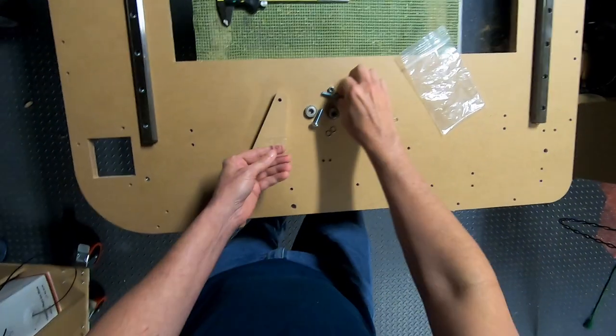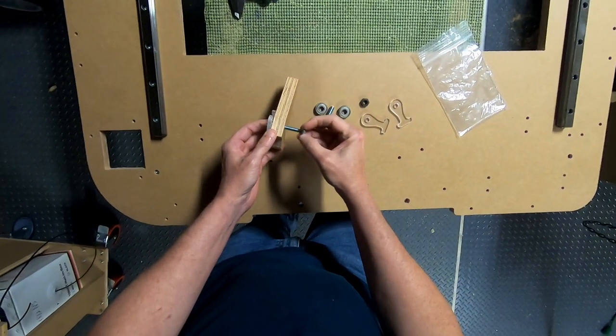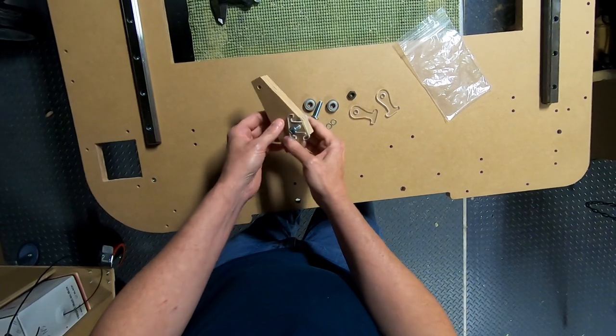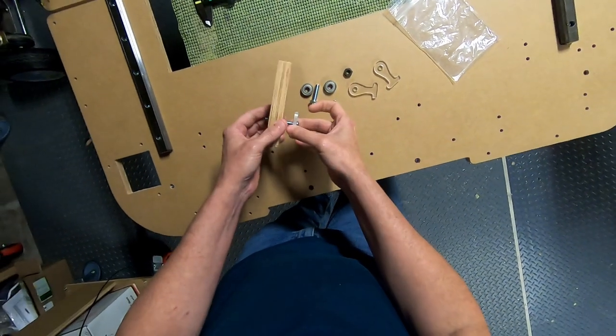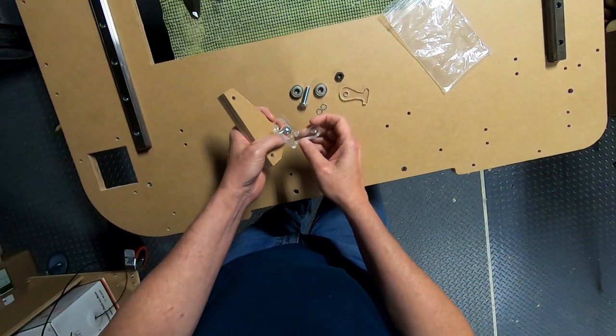We'll start by putting this piece into here, and you don't want to put the nut all the way down. You don't want to tighten it. You want some area here that it can be tensioned later on. You put this piece on here.